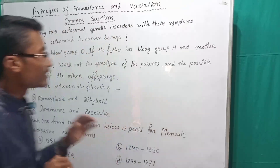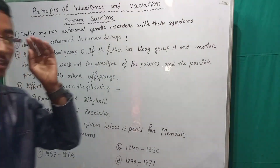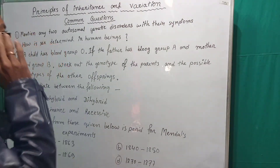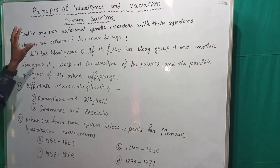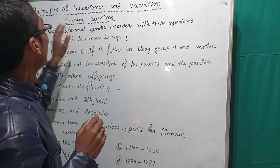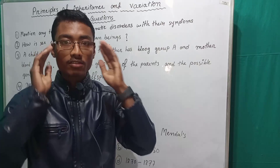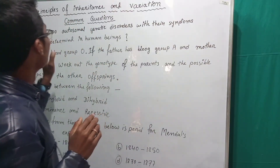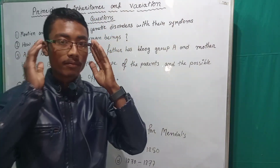I have written some most important questions on the board, so you can see them. The first question is from Chapter 5: Principles of Inheritance and Variation.